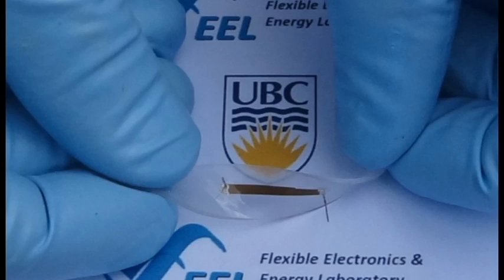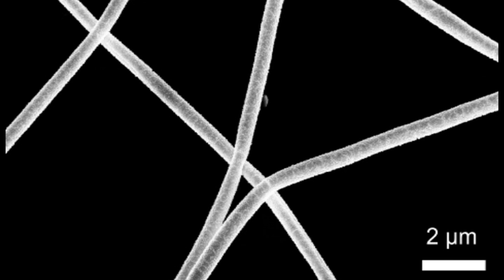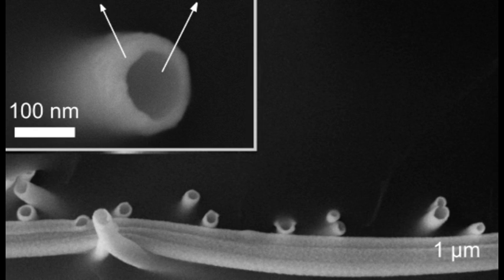For the flexible electronic part, we use nanofibers as a base material, a base system. Nanofibers are about 200 to 300 nanometers. So if you put about 500 layers of nanofibers on top of each other, it becomes a thin layer with the thickness of an A4 paper. So they are pretty thin. And because they are very thin, they are very flexible.